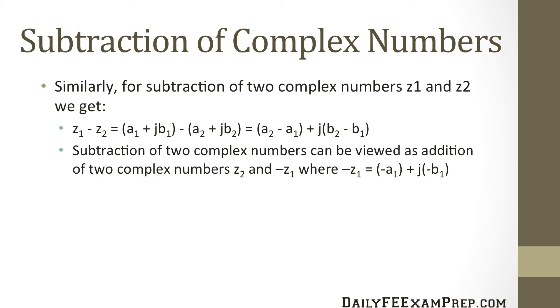Now subtracting complex numbers is very similar. For subtraction of two complex numbers z1 and z2 we get z1 minus z2 equals a1 plus jb1 minus a2 plus jb2 and that equals a2 minus a1 plus j times b2 minus b1. So the subtraction of two complex numbers can be viewed as addition of two complex numbers z2 and minus z1 where minus z1 equals minus a1 plus j times minus b1.